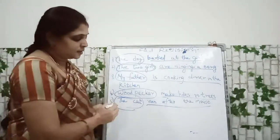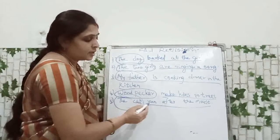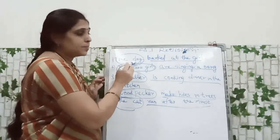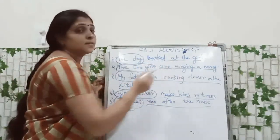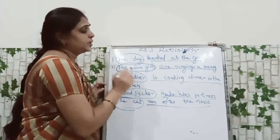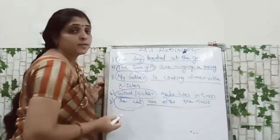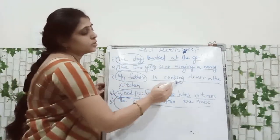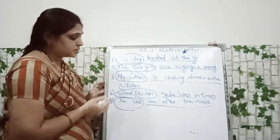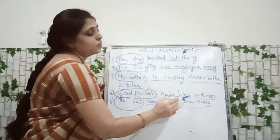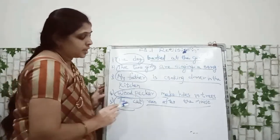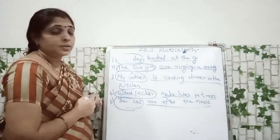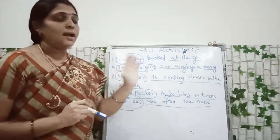The cat is the naming part. Ran after the mouse is the action part. So a sentence has two parts: naming part and action part.